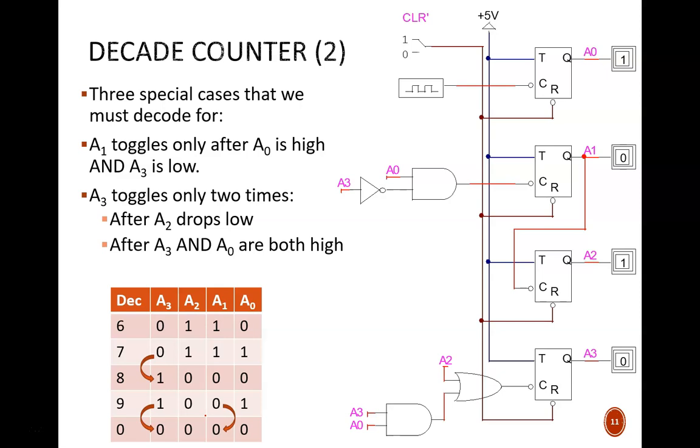Fortunately, A2 needs no special changes. Its pattern of toggling only when A1 drops high to low works for the bulk of the count, and also at the recycling point, since A1 doesn't change there. So, output A1 feeds straight into the clock port for A2.